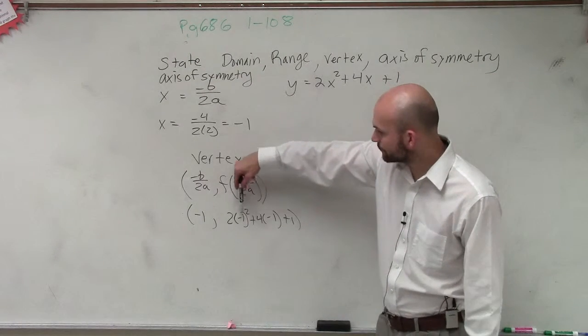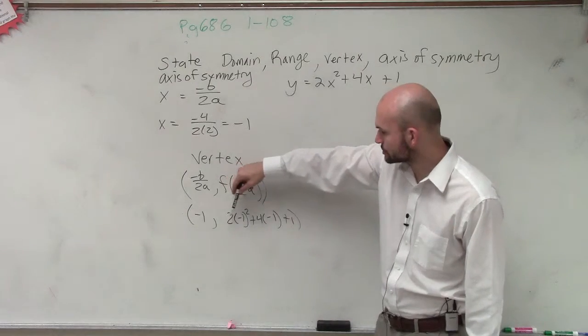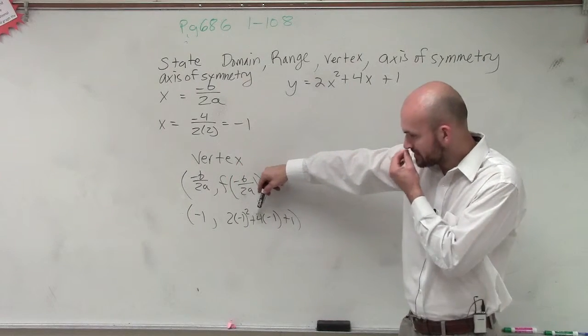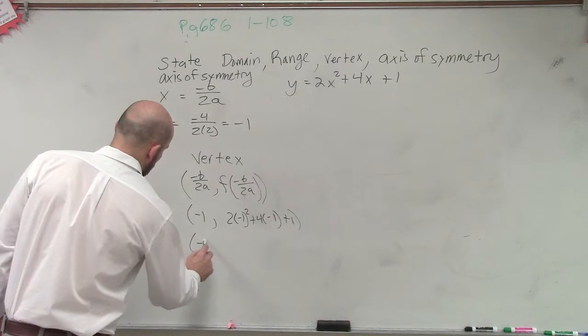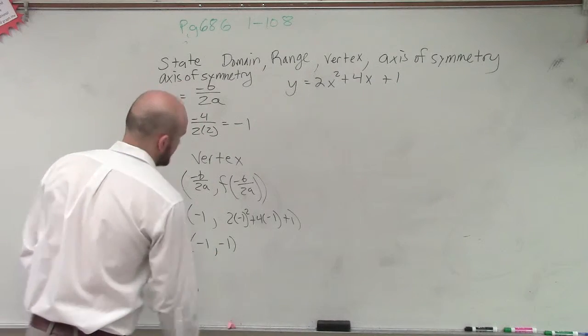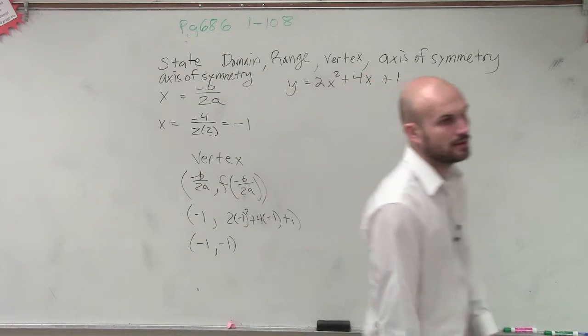So negative 1 squared is positive 1. 1 times 2 is 2. Minus 4 is going to be negative 2. Plus 1 will be negative 1. So therefore, your vertex is at negative 1 comma negative 1.